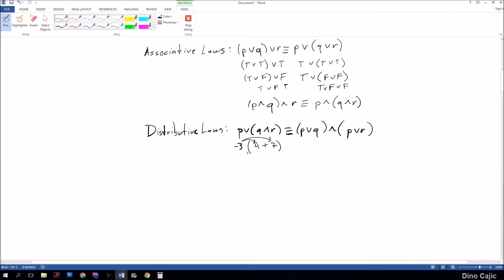Or we can do it individually. We can say negative 3 times 4 plus negative 3 times 7. So what does that come out to? Negative 12 plus negative 21, which equals negative 33.